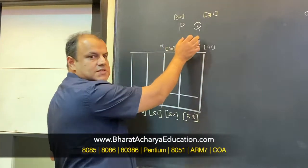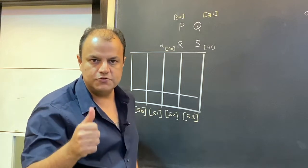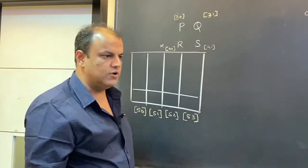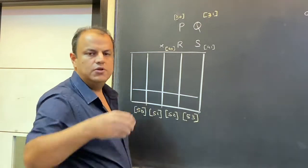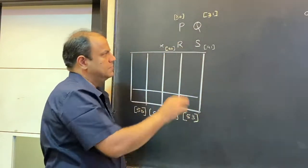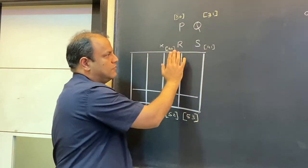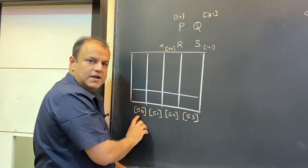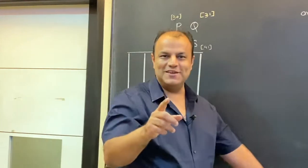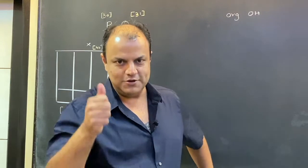Let's say we have one 16-bit number PQ. A 16-bit number cannot be stored in one location, so it will be stored in two locations. You can take any two locations or registers you want. I'm taking locations 30 and 31. I'm going to use the operands at 30, 31 and 40, 41, and the result will be at 50, 51, 52, 53. I'll give you this in the PDF along with this video.